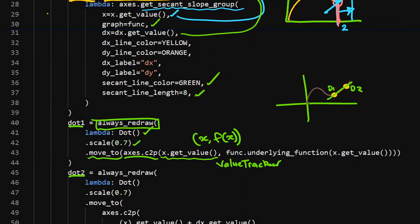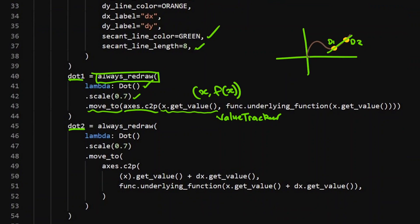So as the value tracker is moving, so will this dot and the secant. So the value tracker is controlling two of my functions now. And then you can see here with this dot number two, dot number two here, always redraw it, scale it down to the same size, move_to axis.coordinate_to_point.